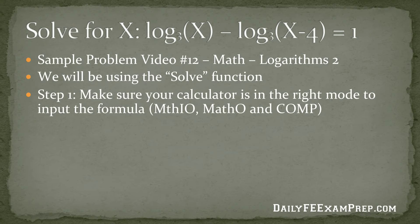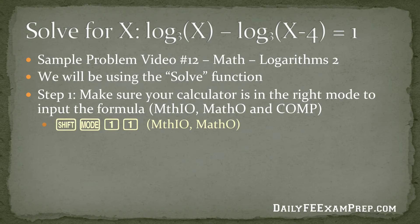Okay. So the first step that we want to do is we want to make sure that the calculator is in the right mode to input the formula. So the mode that we want to be in is math IO, math output, and the comp mode. So to do that, we want to hit the shift button, then the mode button, and then hit one and one. That'll get us into the math input output mode and the math output mode.